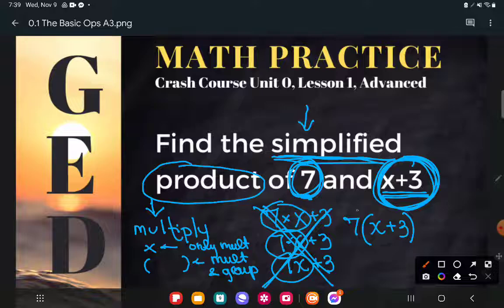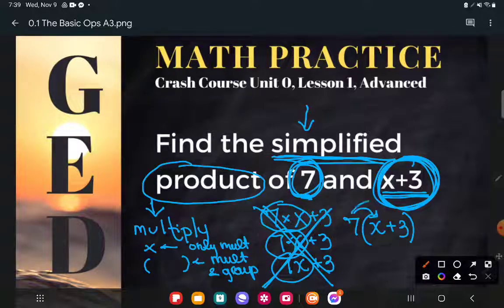Remember that multiplication passes out over a grouping. And so this seven is not just multiplying by the x, it's also multiplying by the plus three or the positive three. So what's seven times x? Seven x.